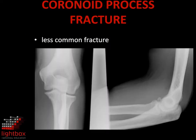Fractures of the coronoid process are less frequent in adults, but are commonly overlooked due to superimposition of the fracture fragment with overlying bones. They are usually associated with a haemarthrosis.